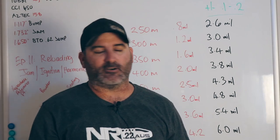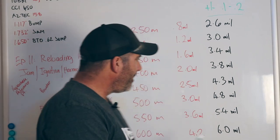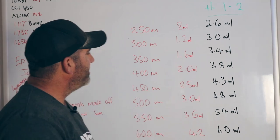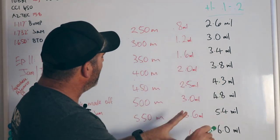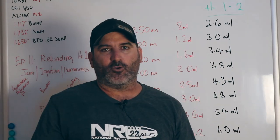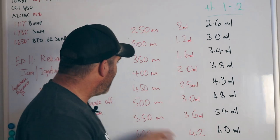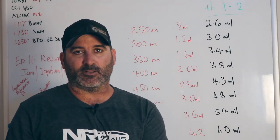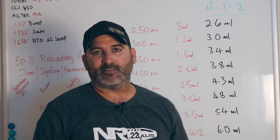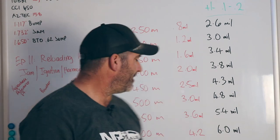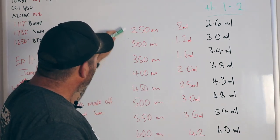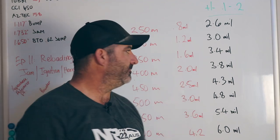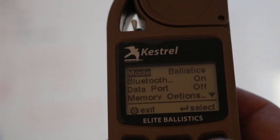We're doing the exact same thing but with elevation this time. The end game is: at 400 meters, what do I have to manipulate my data to hold 4 mil? At 450 meters, what do I have to do to achieve a 4.5 mil hold? This will work for yards or meters — it doesn't matter. Whatever range you're shooting at, what do we have to do to make that our elevation call?